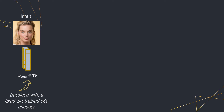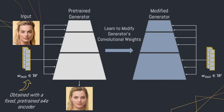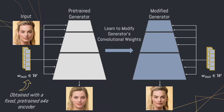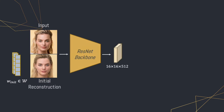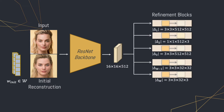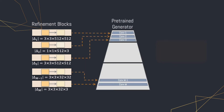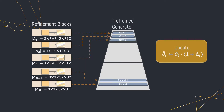We are given an input image and a pre-trained generator, and as with PTI, we begin with an approximate latent representation of the image in the highly editable W latent space. Our goal is to find a modified generator that leads to a better reconstruction of the input image using the same latent code. We begin by passing the input image and initial reconstruction to a ResNet-based backbone that outputs a single feature map, which is then passed to a set of refinement blocks. Each refinement block is tasked with outputting the weight offsets for each convolutional layer of StyleGAN's synthesis network.